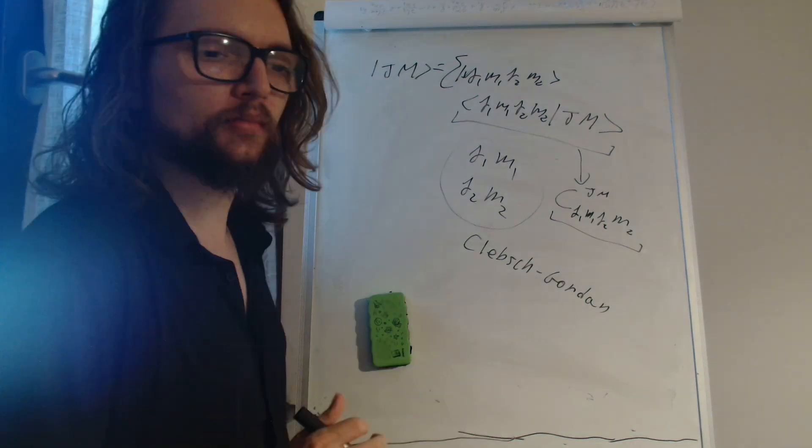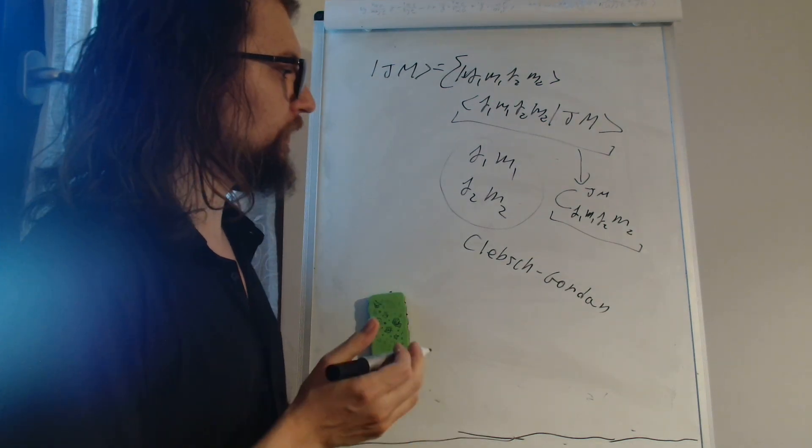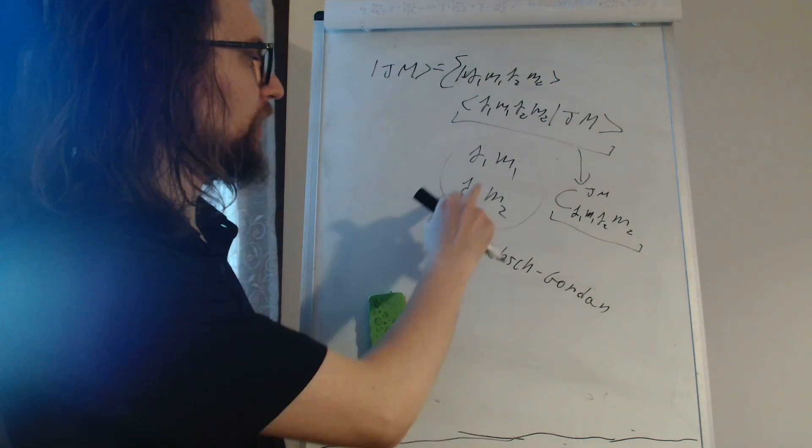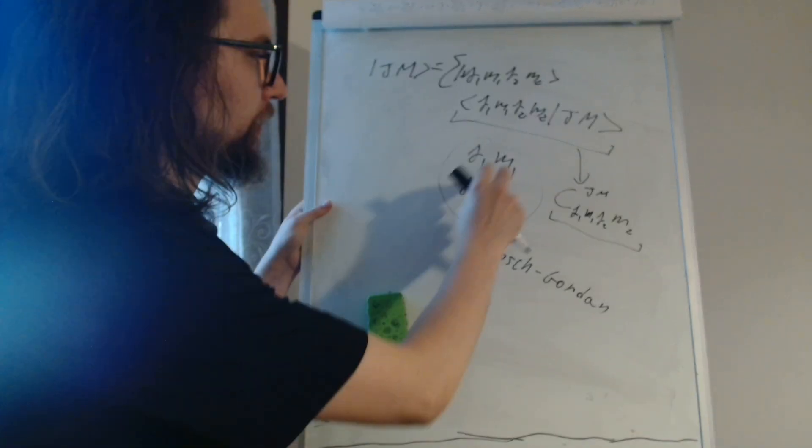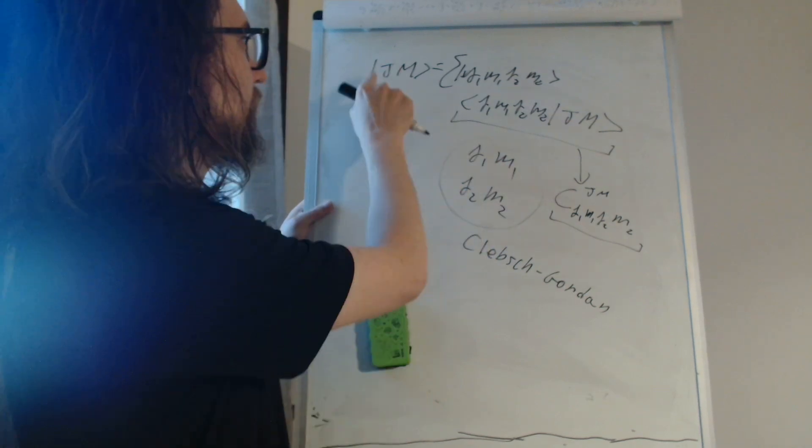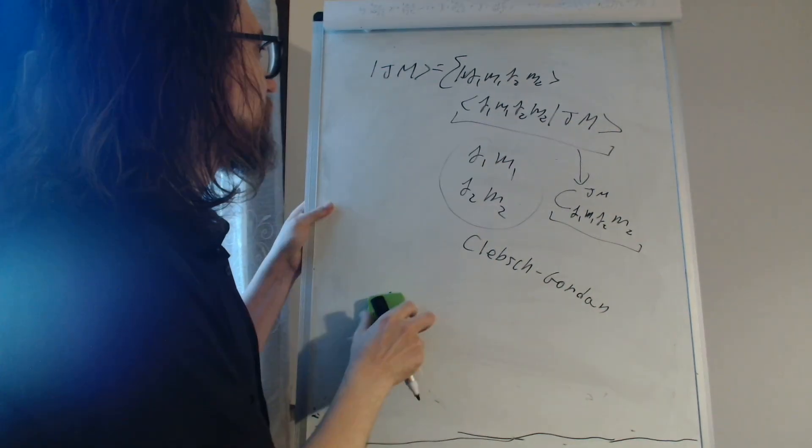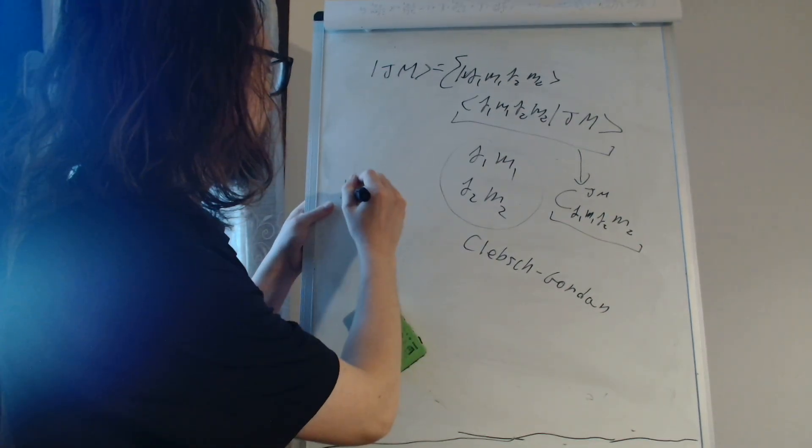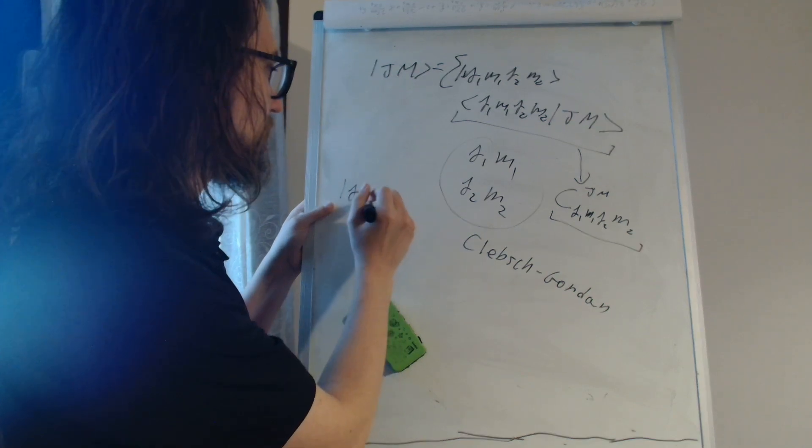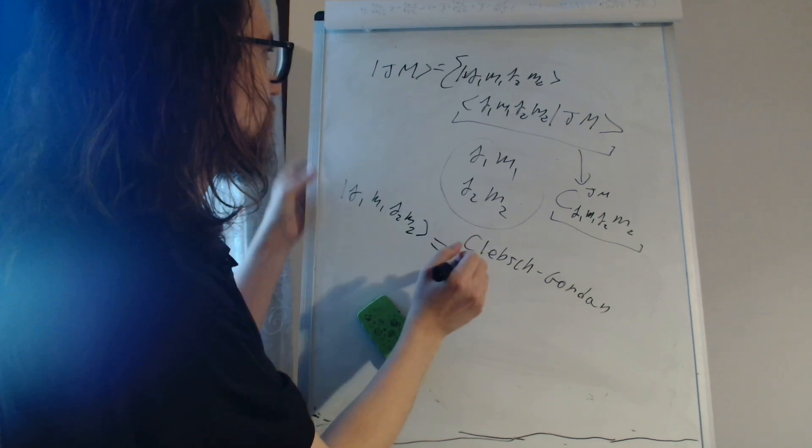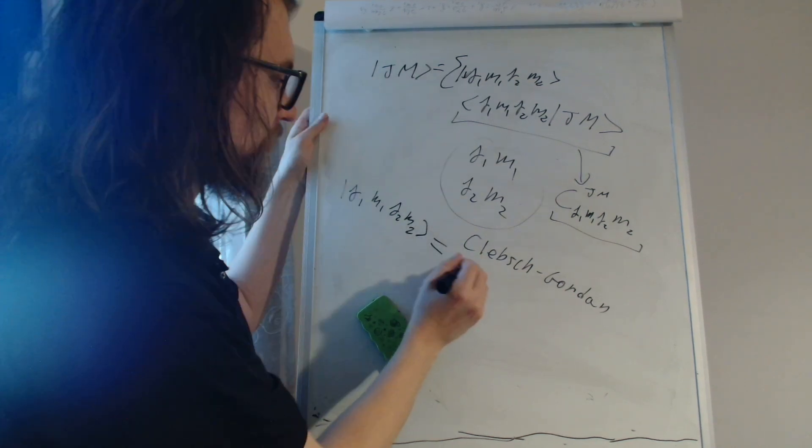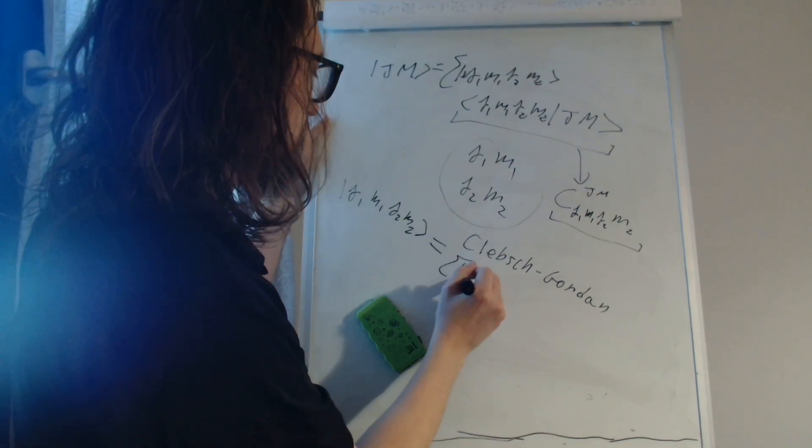Now about the inverse problem: you have J1, M1, J2, M2, and you want to calculate the probability that they couple to a system with J and M. In this case, we expand J1, M1, J2, M2 in basis J, M.